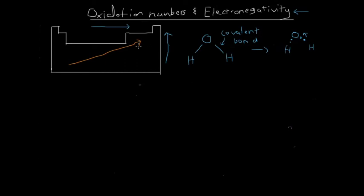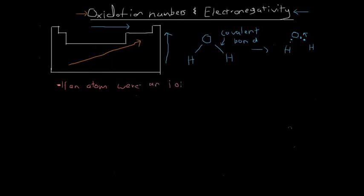This electronegativity, and the fact that it increases in this direction, allows us to calculate something called an oxidation number. An oxidation number is basically: if an atom were an ion, what would be its charge? So if an atom were an ion, what would its charge be? Say we have a molecule - there are no ions in a water molecule - but if we consider the oxygen atom or the hydrogen atom to be an ion, then we ask ourselves what would its charge be. And the answer to that question is what we call the oxidation number.